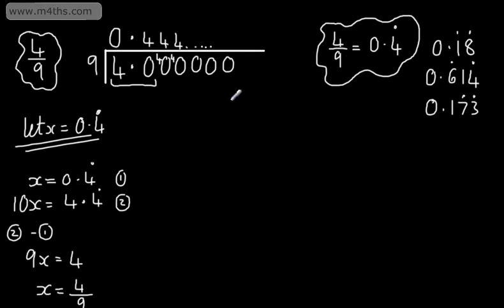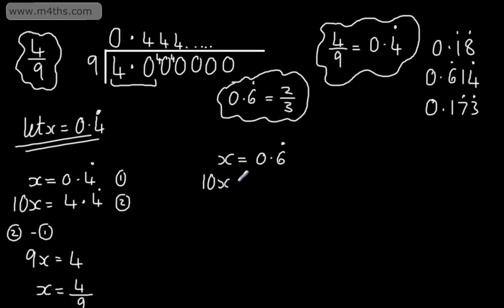Let's look at one we should know. 0.6 recurring, if we wanted to write this as a fraction, is 2 thirds. So we would use exactly the same approach. We don't need to be as formal as writing equation 1 and 2. We can simply say now x is going to be equal to 0.6 recurring. So just write, let x be equal to 0.6 recurring. 10x is going to be equal to 6.6 recurring. Simply multiplying both sides of the equation by 10. Subtracting away 10x minus x gives me 9x. 6.6 recurring minus 0.6 recurring is 6. Dividing both sides by 9, 6 over 9. We can divide the numerator and the denominator by 3, which will give me 2 over 3.